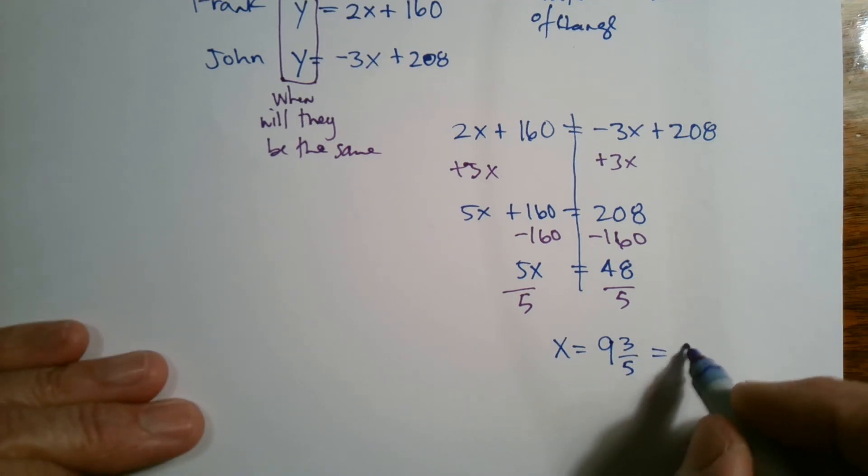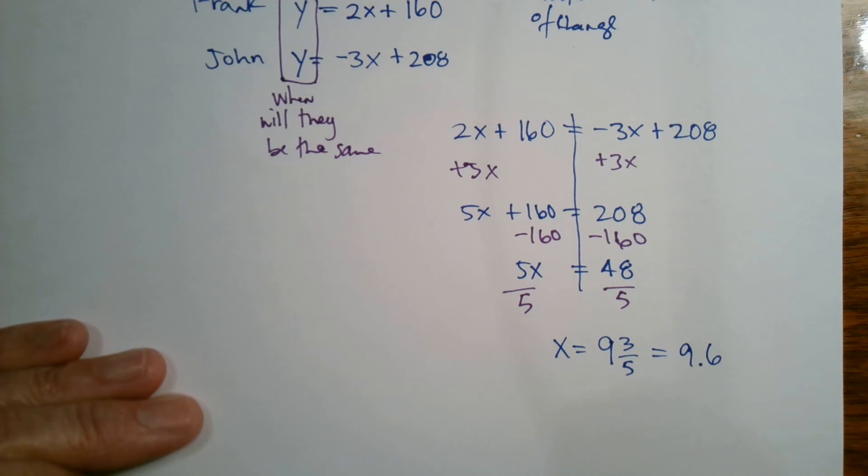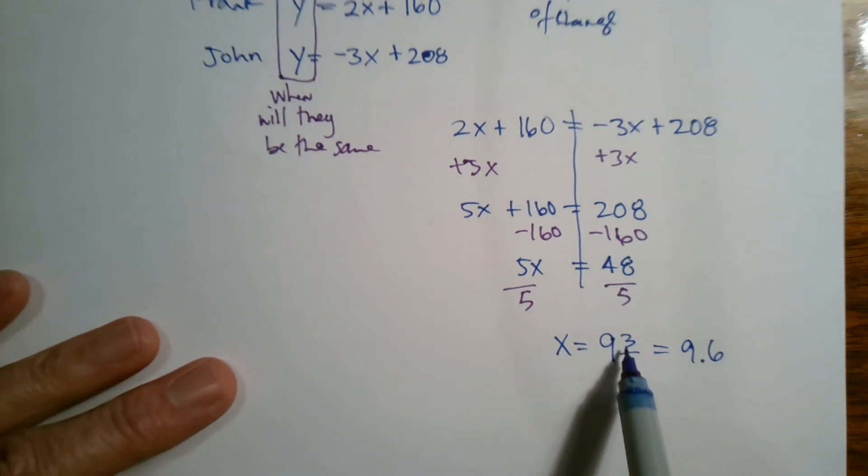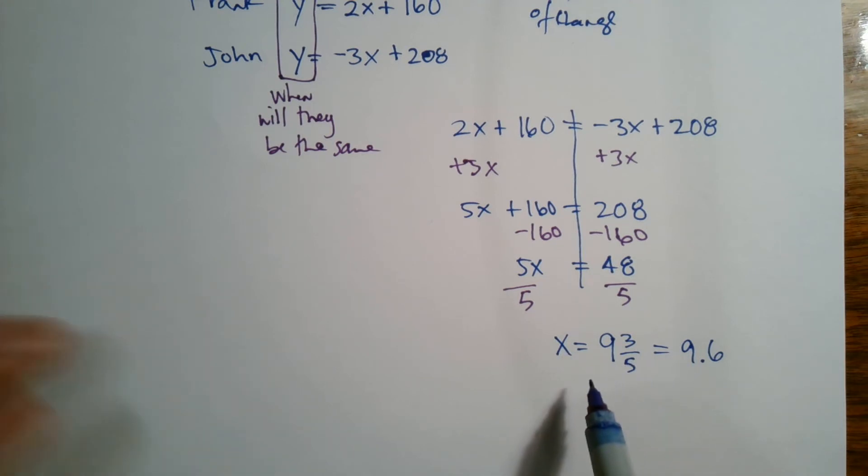If you want it as a decimal, that's 9.6. So what does that mean? That tells me that nine and three fifths weeks. So it's going to take nine and three fifths weeks for them to be equal weight.